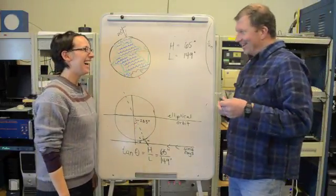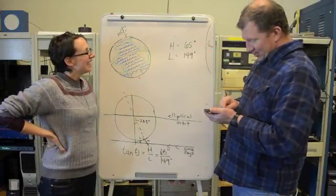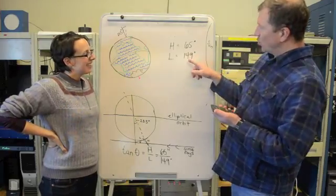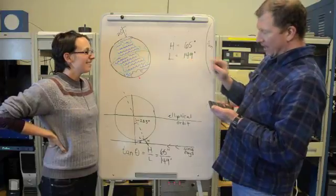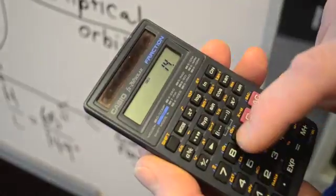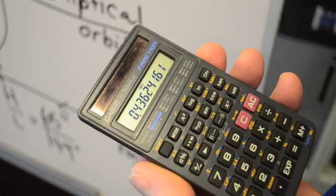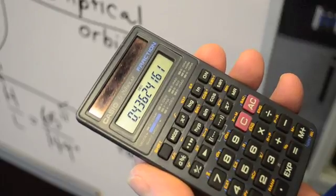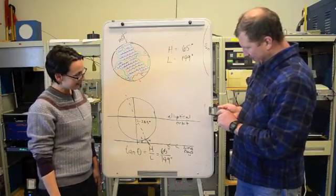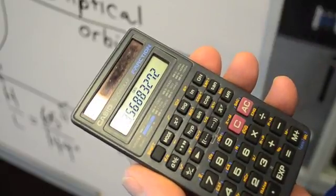I just happen to have a calculator. Let's see if we can figure out what that is. Your height was 65 inches, and we divide that by 12 feet 5 inches, which is 144 plus 5, which is 149. And the answer is 0.43624. And if we back up and find the angle from that — inverse tangent — 23.5 degrees.